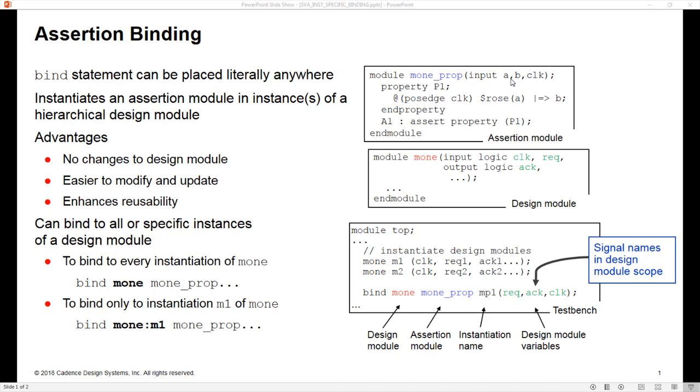Inside of those is our properties which are referring to the signals in the portlist. Obviously if we refer to signals which weren't in the portlist then we make this non-portable now. And the whole point of having these assertion modules just like UVCs inside of a UVM testbench is that we have a module we can instantiate and connect to whatever it is we wish to verify in a reusable way.